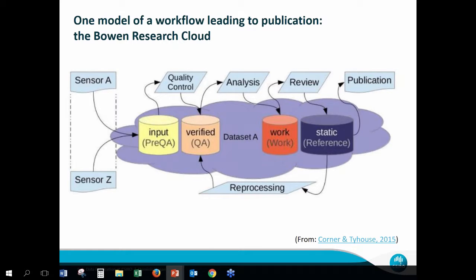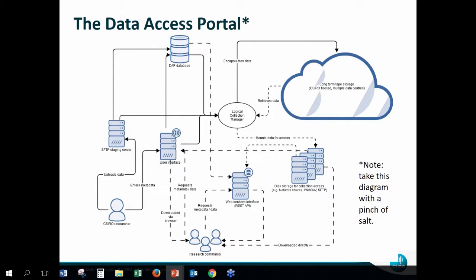We're trying to move towards having one unified repository that at least catalogues everything in CSIRO, and we're making progress. The Data Access Portal itself is not really just one system — it's actually a few systems that play together nicely. With our CSIRO researcher, they're entering metadata into the user interface and uploading their data to an SFTP staging server, which is all fairly straightforward. Most researchers get that done without ever asking for any help.